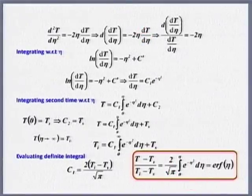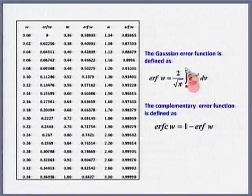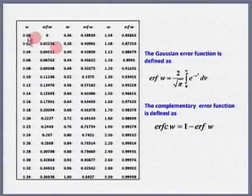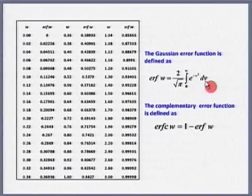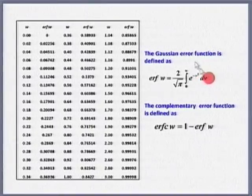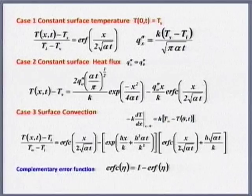This whole expression — 2/√π times the integral from 0 to η of e^(−η²) dη — is called the error function. At every η this has been tabulated. The error function erf(w) = (2/√π) ∫₀^w e^(−w²) dw. This is called the Gaussian error function, and for every w there is a tabulated value, so I do not have to bother about integrating each time.